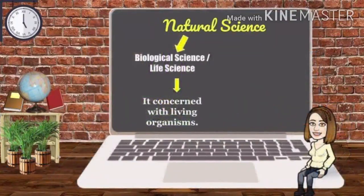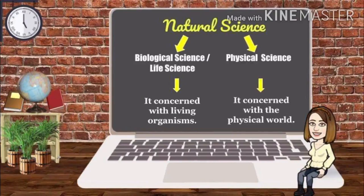If we say biological science or life science, it is concerned with the living organisms — examples are animals, plants, humans, and all other living organisms that can reproduce. While physical science is concerned with the physical world, phenomena like gravity, eclipse, and revolution.